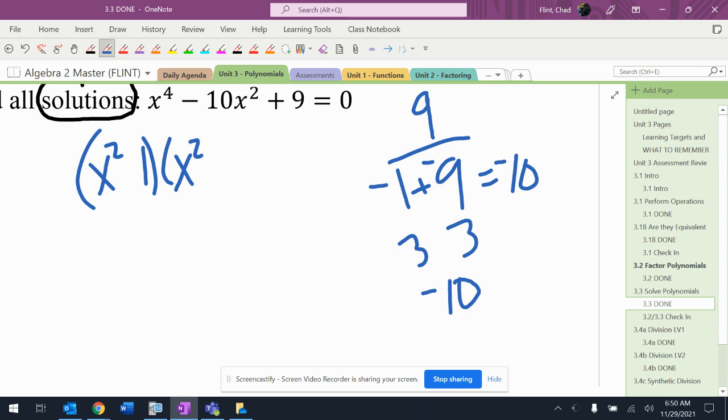So it should be x squared minus one, x squared minus nine. That's factored correctly. Each one of these is a difference of two perfect squares.